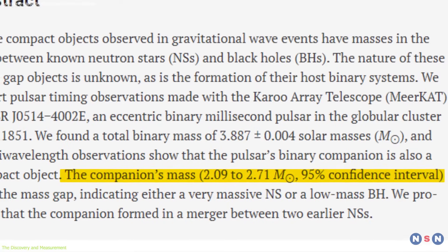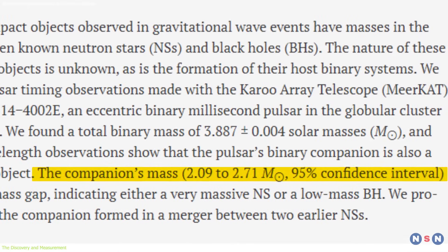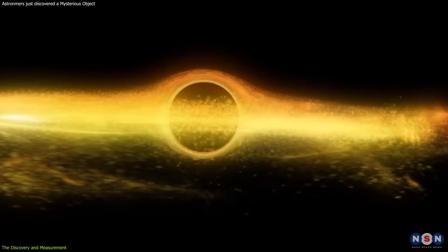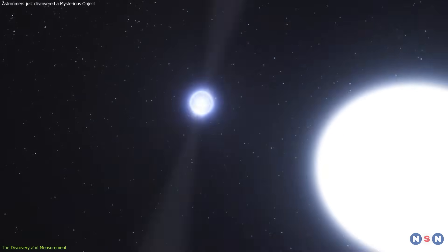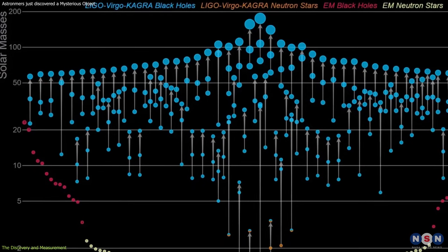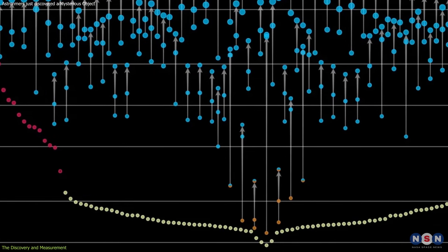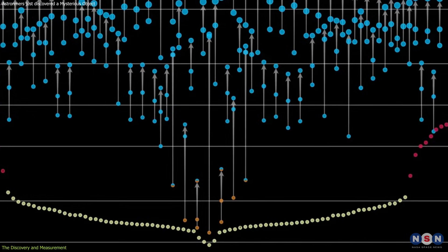This object has a mass between 2.09 and 2.71 solar masses, which is more than any known neutron star, but less than any known black hole. This places it right in the lower mass gap, a range of masses between 2.2 and 5 solar masses, where very few neutron stars or black holes have been detected.